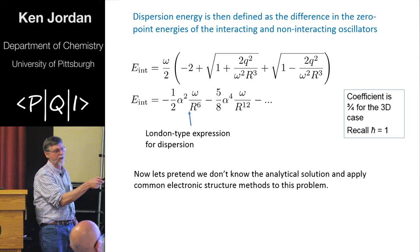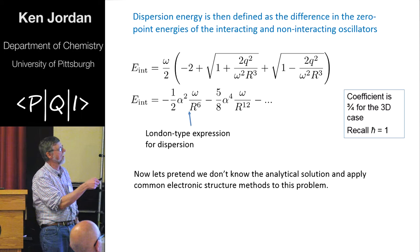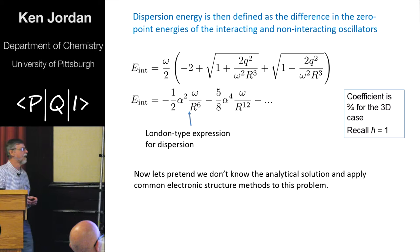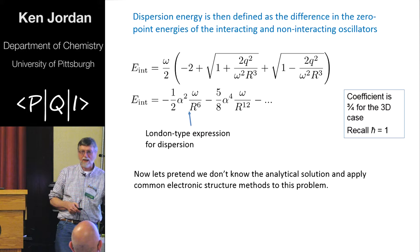And if you just do a Taylor series, so there's your final result. If you do a Taylor series of that, the leading term goes like the polarizability squared omega r to the sixth. That's just the London expression for the dispersion interaction between two atoms.